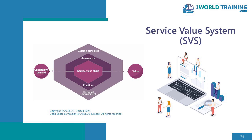The components of the value system itself are: the guiding principles, which we've already looked at; governance, which we've already looked at; a service value chain, which we're going to be looking at in about five minutes; and the 34 ITIL practices, which we'll be looking at tomorrow but I'll be mentioning in various ways during the afternoon today; and continual improvement.